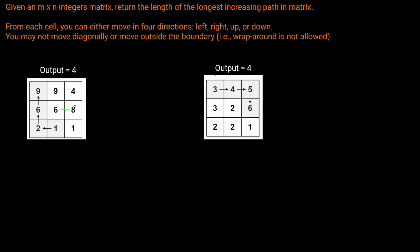The eight can't go in any of its directions. The six could go to the nine but then can't continue in any direction. This two could go to certain tiles but that's only a path length of three, whereas we have the optimal path of four.